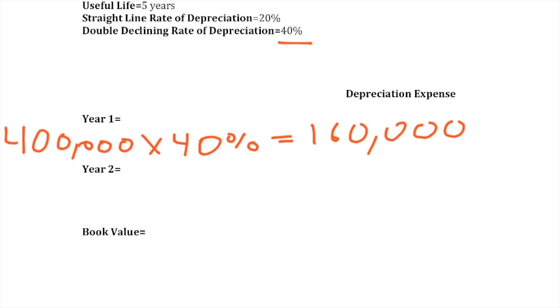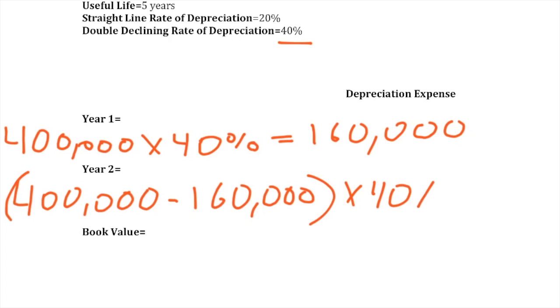Year 2 is going to be $400,000 minus $160,000 times 40% again to give us $96,000.